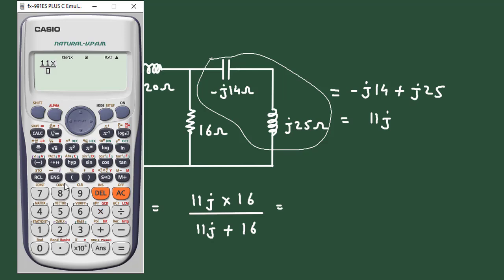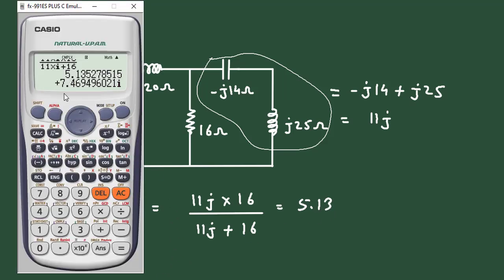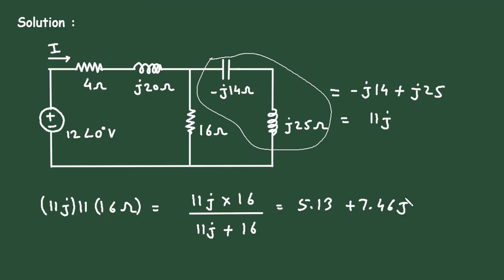11j into i into 16. So it is equal to 5.13 plus 7.46j.